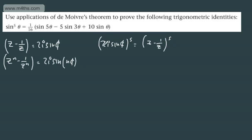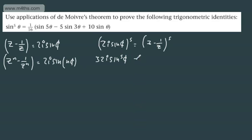We have a slight issue here because we've got 2i. If I raise 2 to the fifth, I'm going to get 32. If I raise i to the fifth, I'm going to get i — i to the fourth is 1, so i to the fifth is i. So this gives me sine to the fifth theta.